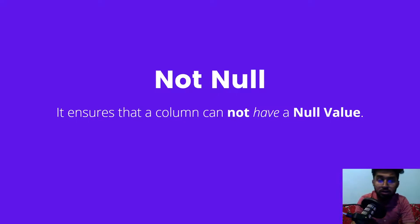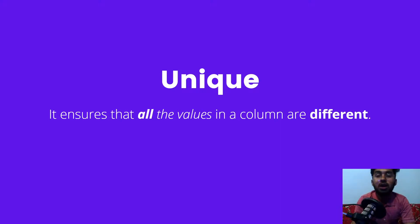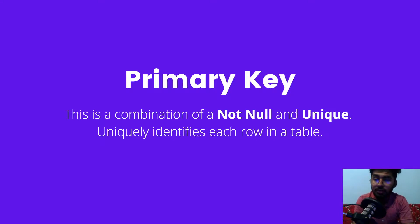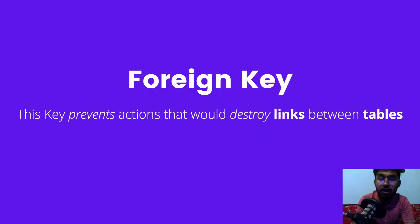NOT NULL constraint ensures that a column cannot have a null value. UNIQUE constraint ensures that all the values in a column are different. PRIMARY KEY is a combination of NOT NULL and UNIQUE — it uniquely identifies each row in a table.